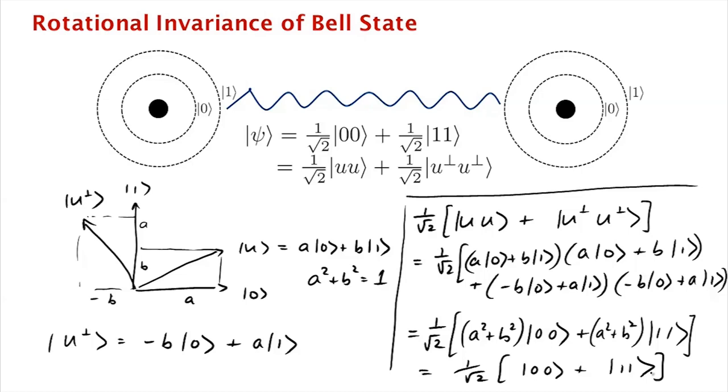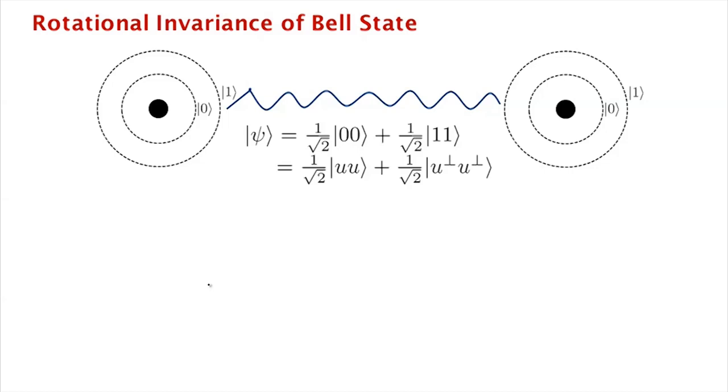Now, one thing I should caution you about is that this state, 0, 0 plus 1, 1, is rotationally invariant with respect to real rotations. So a and b have to be real here for this rotational invariance to work. If you wish to actually have a state that's invariant under all complex rotations, then you have to go to a different Bell state, which is called psi minus. And that's 1 over square root 2, 0, 1, minus 1 over square root 2, 1, 0.